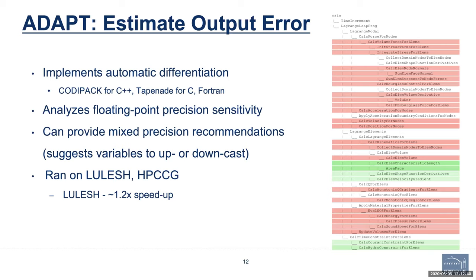The second tool I'm going to talk about is ADAPT, which comes from friends at Livermore. It estimates the output error and sensitivity of the codes. On the right-hand side, you have a report for LuleSH: everything in red needs to be executed in double precision; what is green can probably be lowered to single. Underneath, they use automatic differentiation, using tools like Codipec for C++ or TAPENADE for Fortran. They ran it on benchmarks including LuleSH and HPCG.